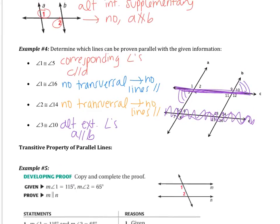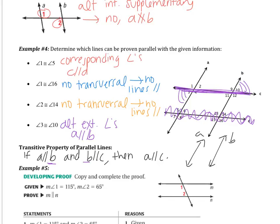The transitive property of parallel lines: if line A is parallel to line B, and line B is parallel to line C, then A is parallel to C. Just like the transitive property before, B acts as our bridge connecting A and C. If A is parallel to B, and I also know that B is parallel to C, then A has to be parallel to C — and that should be pretty intuitive.